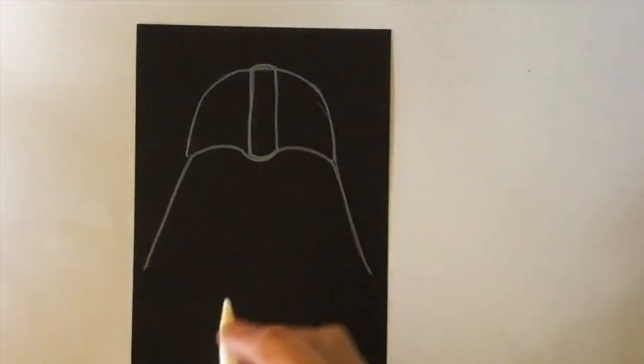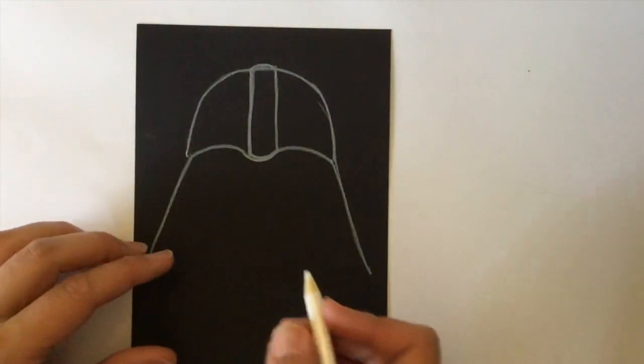Vader's goggles are oval shaped, so draw two ovals for his eyes.